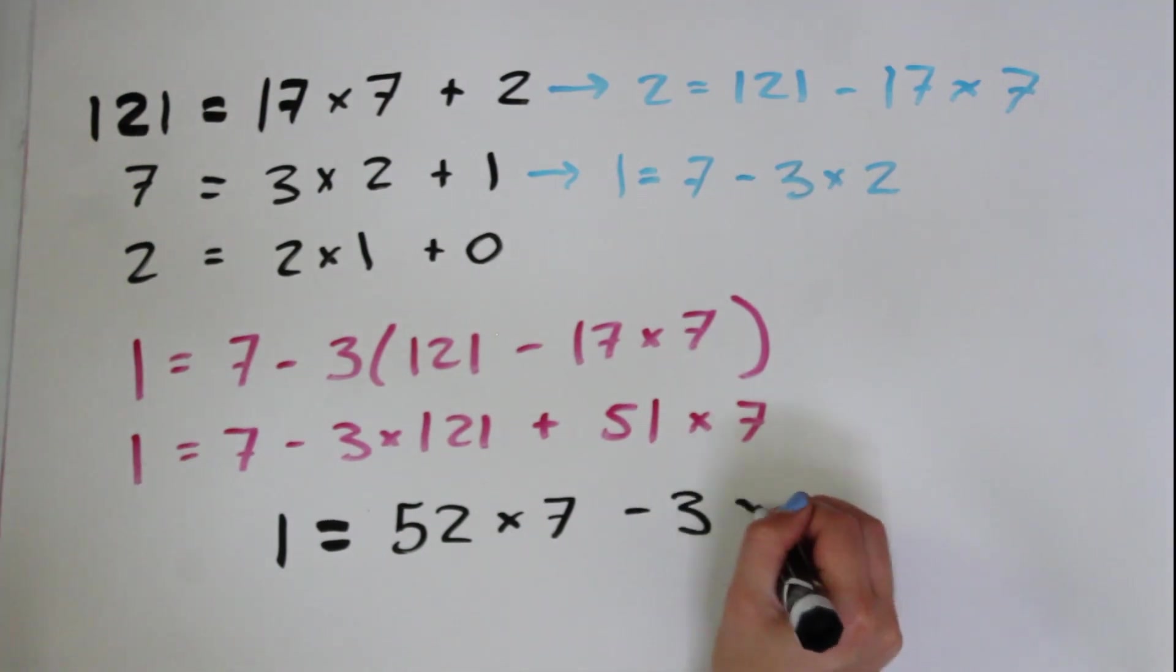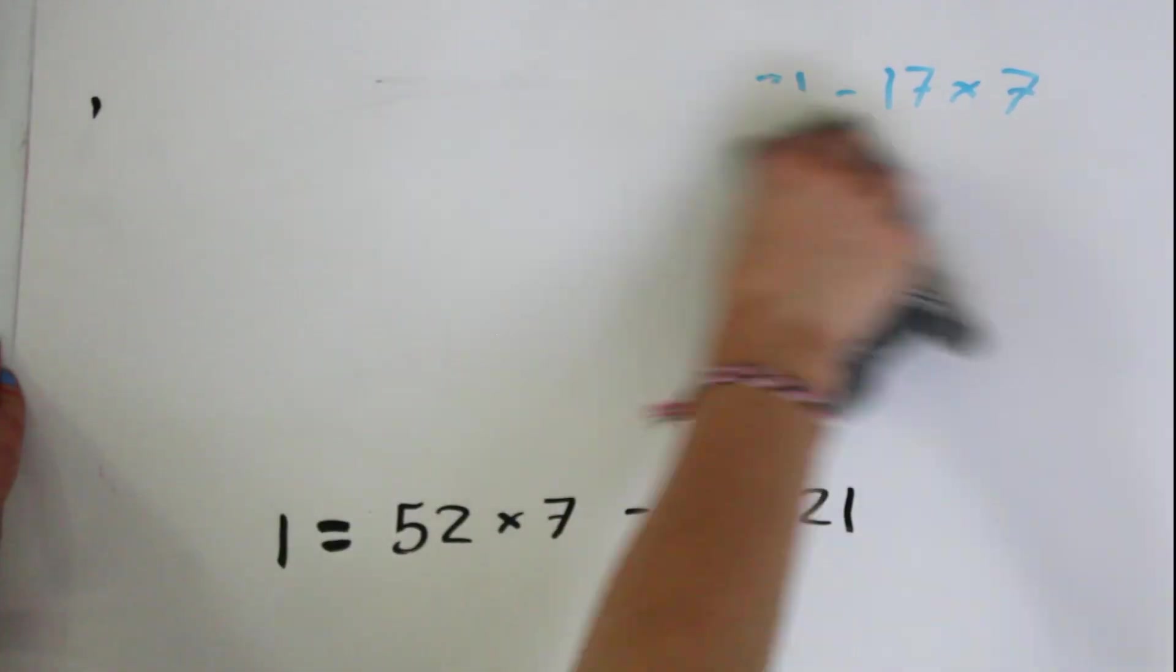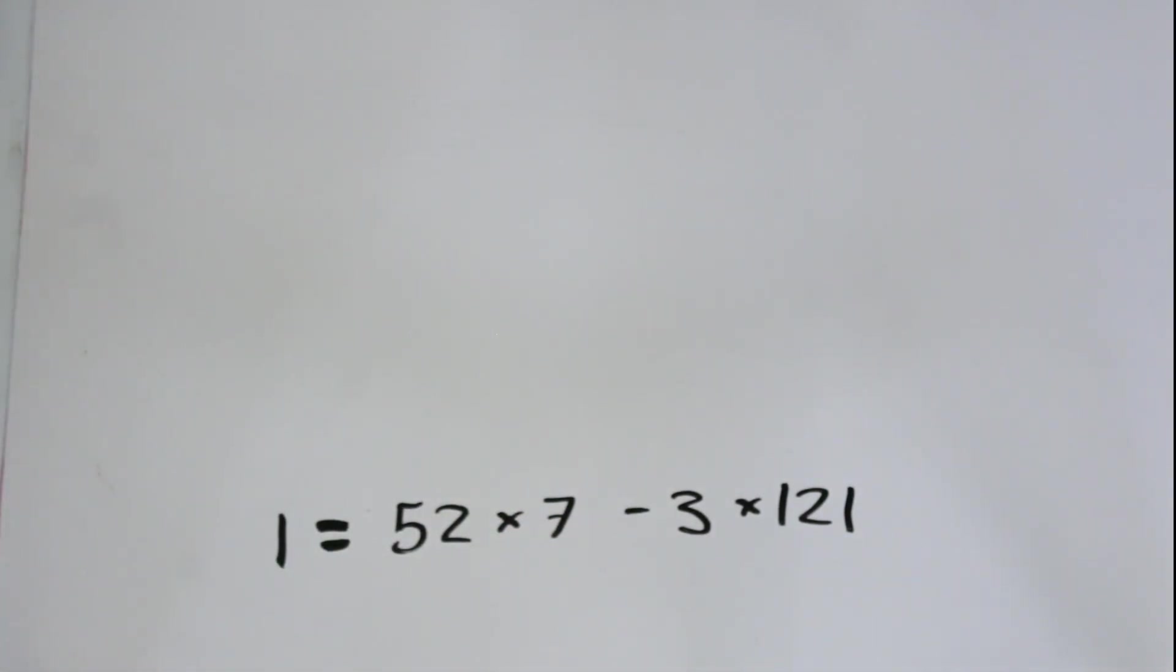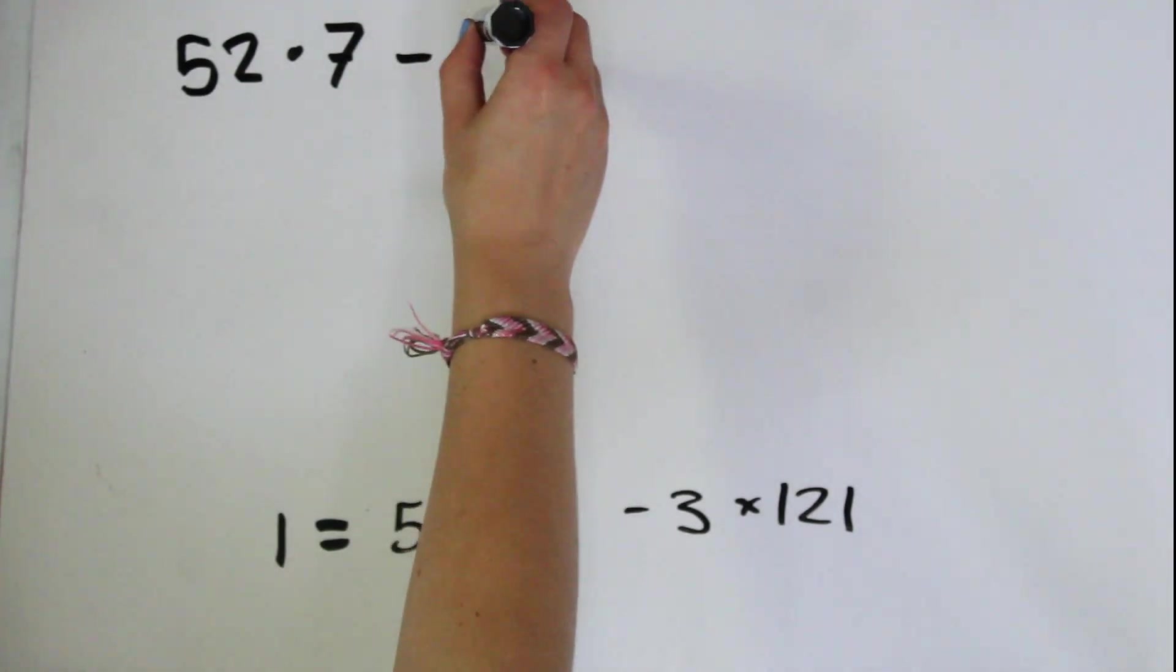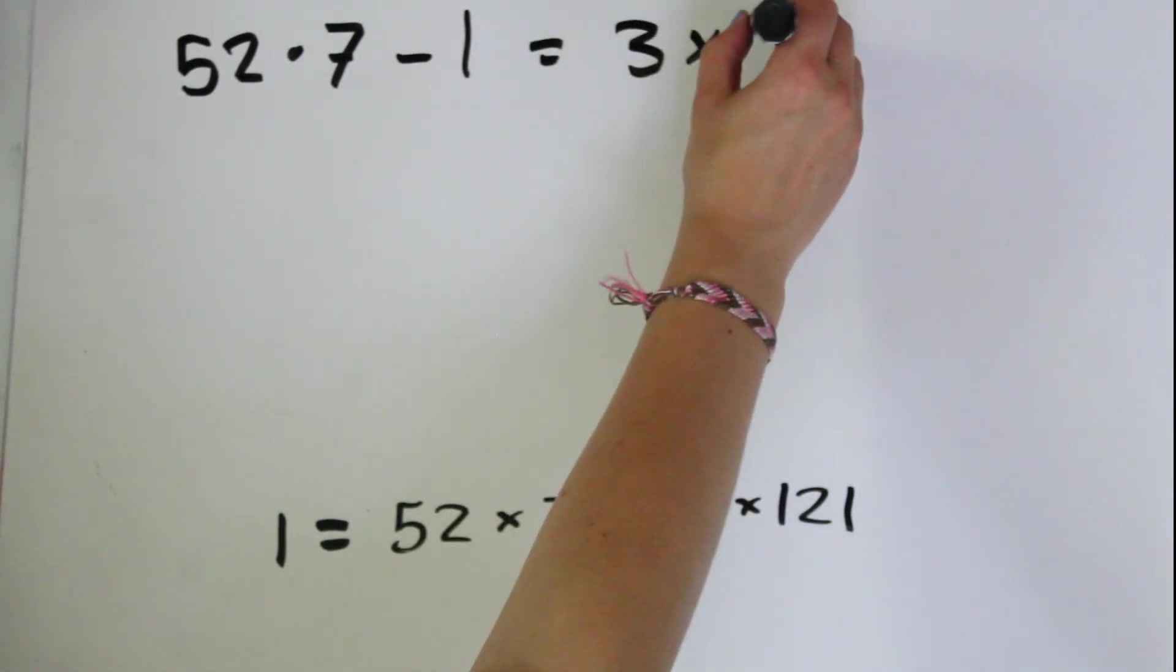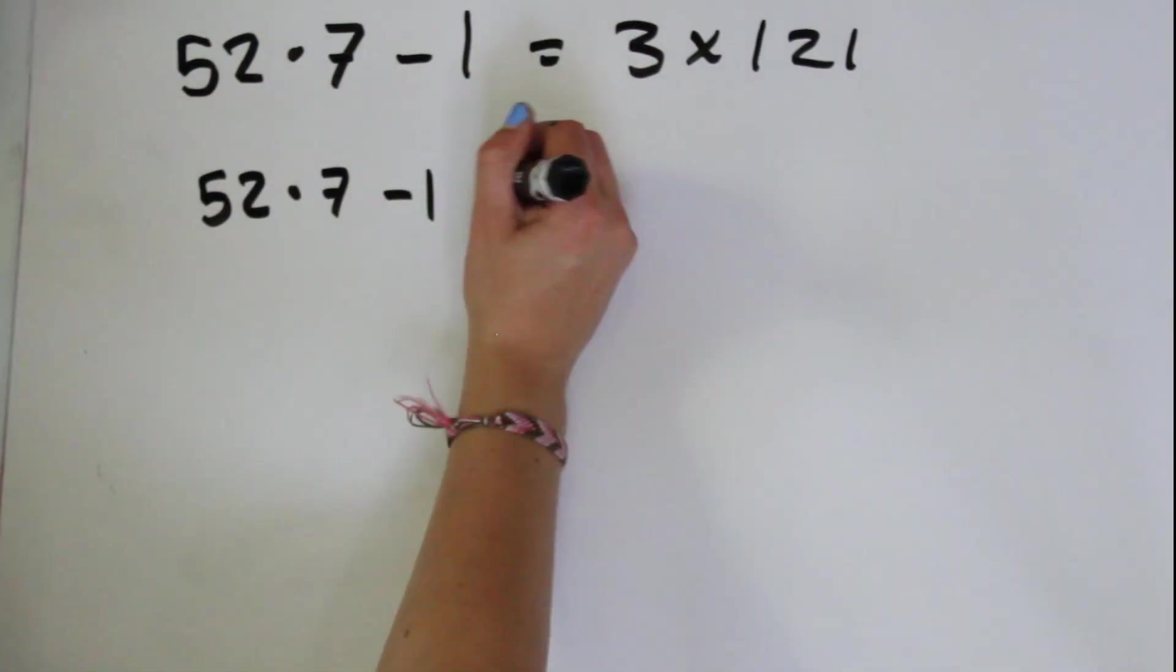I went a little bit quickly here, so go ahead and pause and think through the math for yourself if you're a little bit confused. Now, we can get a better look at this by moving things around. So here we have 52 × 7 - 1 = 3 × 121.